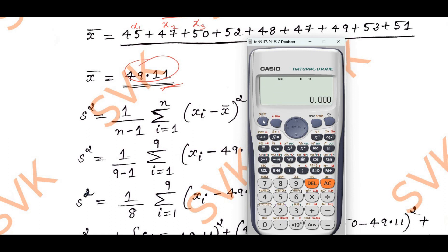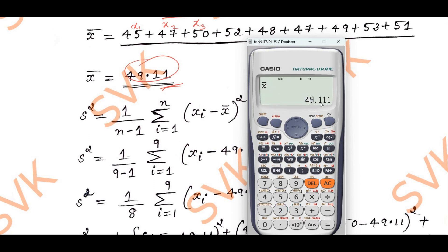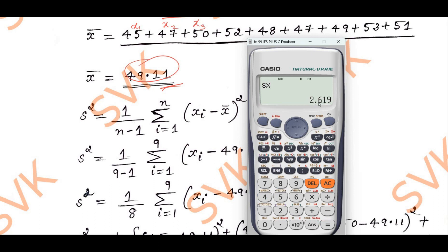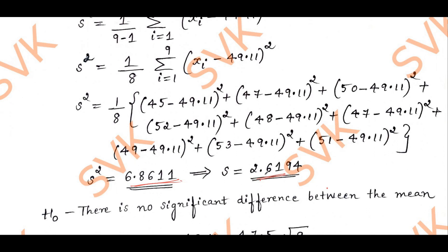After pressing AC, press Shift then 1. Out of 6 options, select option 4 (Variance). To find x̄, press 2 then equals — you will get x̄ = 49.11. For S, use the same procedure: Shift, 1, option 4, then select Sx (option 4) and press equals — you will get S = 2.619.